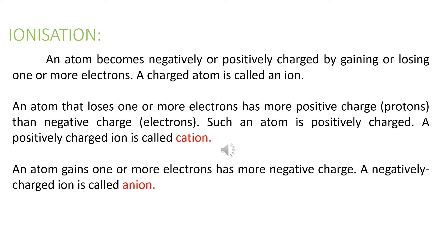When an atom becomes positively or negatively charged by either gaining or losing one or more electrons, we call it an ion. So when an atom loses an electron — a negative charge — it becomes more positive. Such a positively charged ion we call a cation.